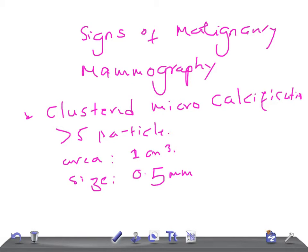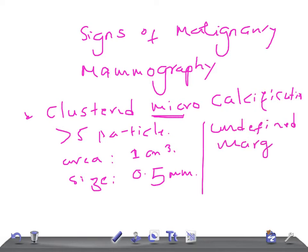Other features of malignancy on mammography include undefined margins — the margins are not well defined, sometimes appearing spiculated. The other sign is spiculations.